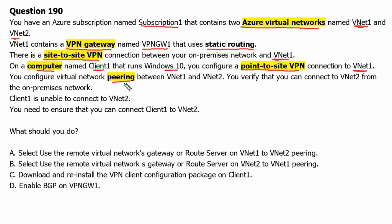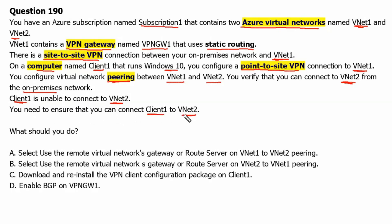You configure virtual network peering between VNet1 and VNet2. You verify that you can connect to VNet2 from the on-premises network. However, Client1 is unable to connect to VNet2. You need to ensure that you can connect Client1 to VNet2. What should you do?